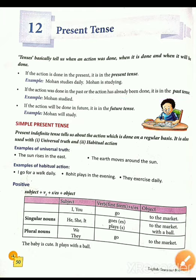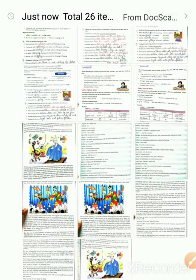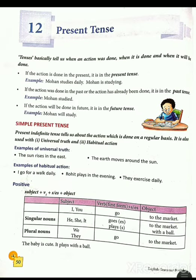We can say: we are reading chapter 12 — hum chapter 12 padh rahe hain. Toh yeh kya hai? Abhi hum padh rahe hain, so it is present tense. Now, if I say I will study chapter 12 — main chapter 12 padhuungi — that will be future tense, because I will read it in the future, not right now. And if I say I read chapter 12 — maine chapter 12 ko padha — toh yeh kya ho gaya? Past, kyunki main padh chuki hoon.